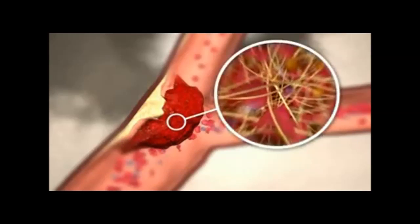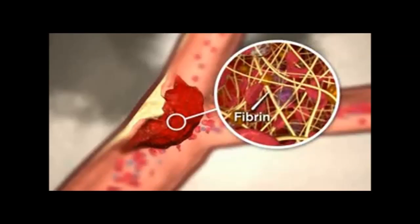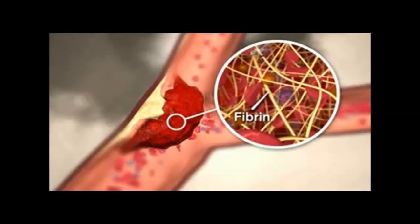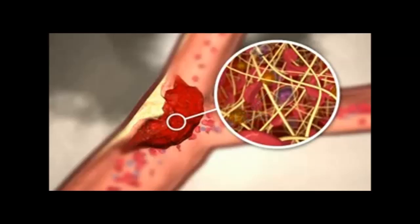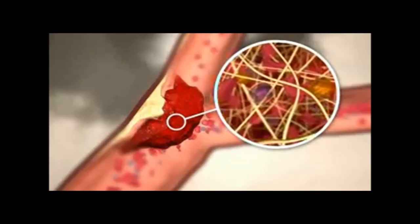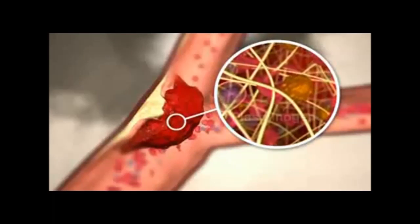Now let's look at the thrombus itself. Inside the thrombus are strands of fibrin, the protein that forms a clot. Enmeshed within the fibrin is plasminogen, the inactive precursor of plasmin.